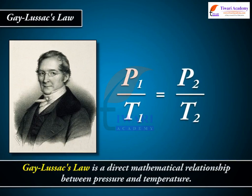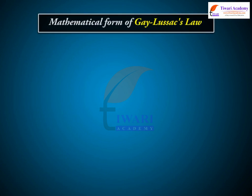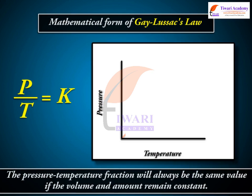Gay-Lussac's Law is a direct mathematical relationship between pressure and temperature. The mathematical form of Gay-Lussac's Law is P divided by T is equal to K. This means that the pressure-temperature fraction will always be the same value if the volume and amount remain constant.